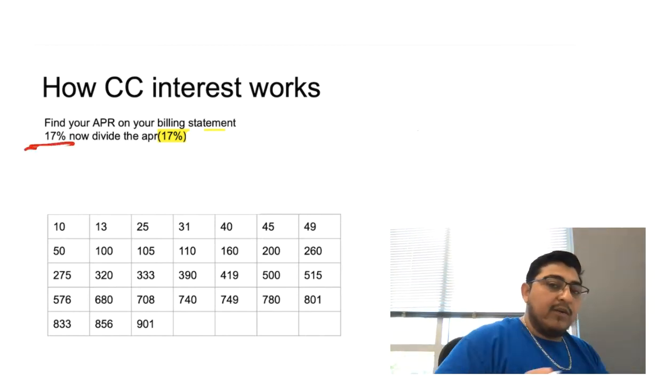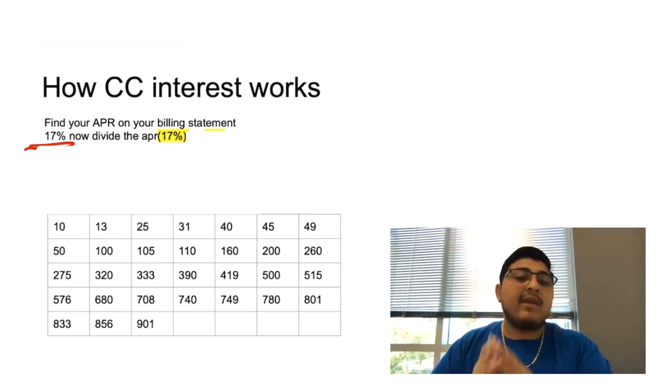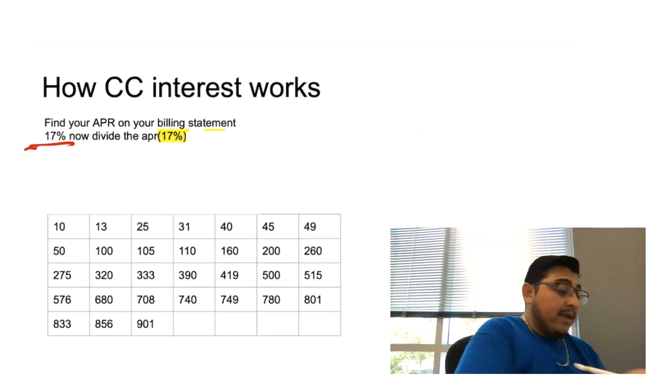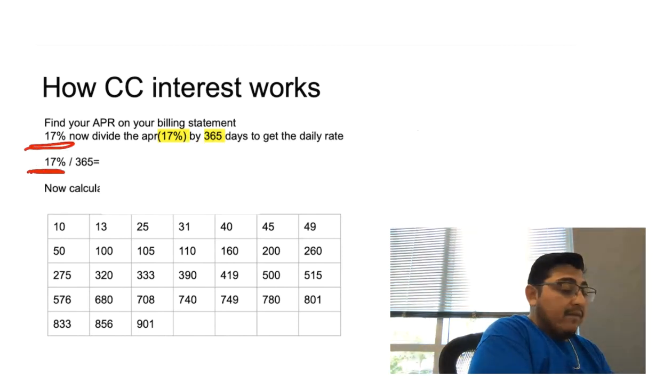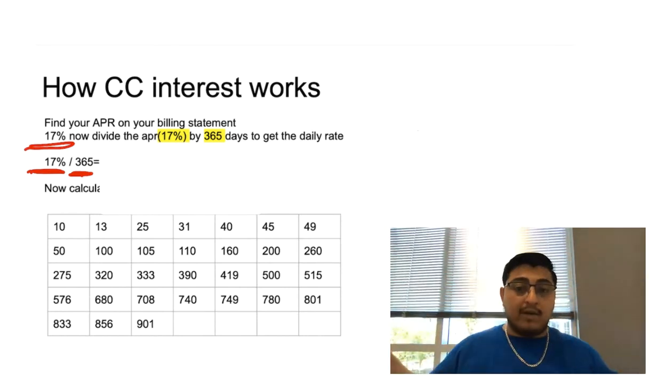Once you find out your APR, which in this case is 17%, you're going to have to divide that by the number of days in a year, which equals 365 days. Find your APR and divide that by 365 days. We're doing this because we need to find out the periodic daily rate, which is going to give us a huge long number.